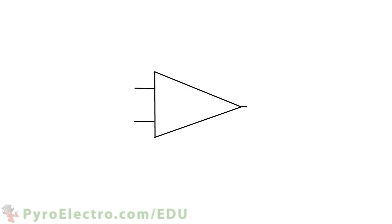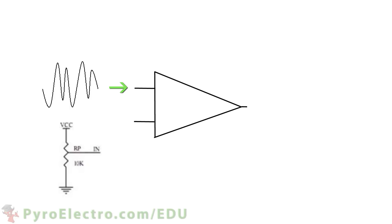Here is an easier way to visualize what the sensor is doing. Audio input is coming into one side of the comparator. The other side of the comparator has a trim pot that sets a threshold voltage value. Whenever that threshold is exceeded, the comparator outputs plus 5V; otherwise it outputs 0V.